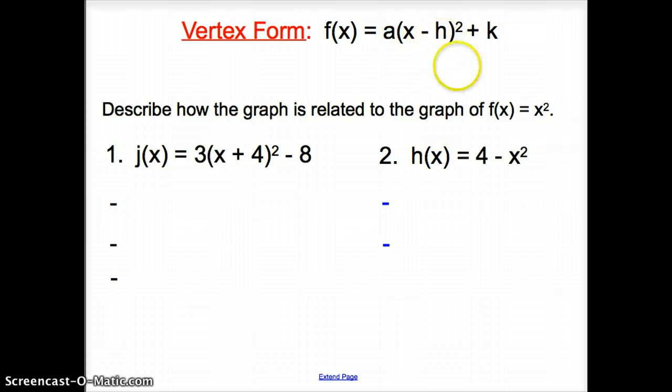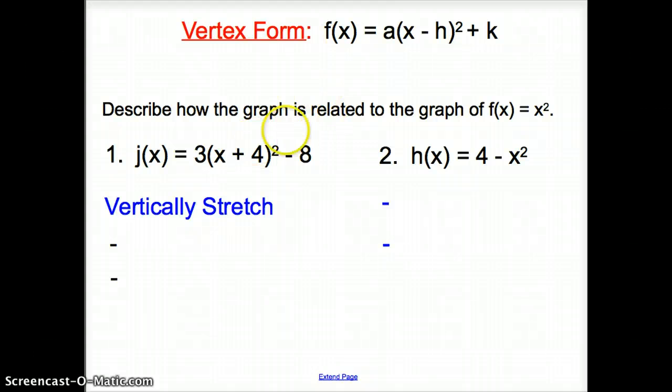a, h, and k will all be some sort of number, like 1, 2, 3, negative 4, negative half. So now we are asked to describe how the graph is related to the graph of f(x) equals x squared. We are looking at this right here. We'll start in the front. What does this 3 do to the graph? Well, the 3 vertically stretches the graph.